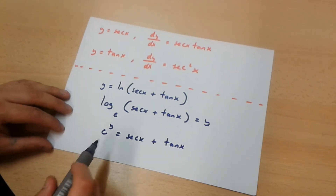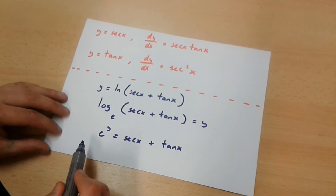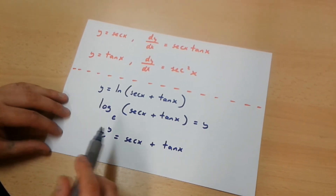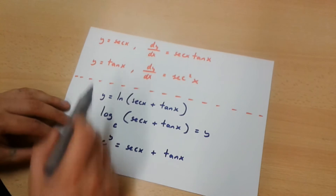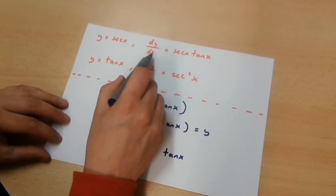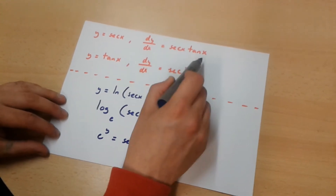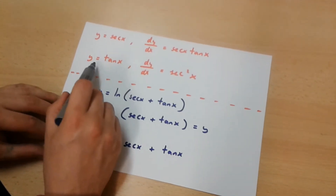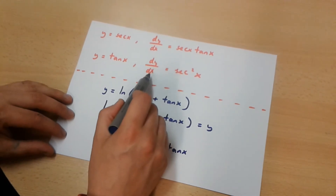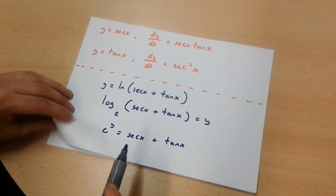Now we are going to differentiate this equation using implicit differentiation. But first we need to know that when y is equal to sec x, dy over dx is equal to sec x tan x. And when y is equal to tan x, dy over dx is equal to sec x squared.